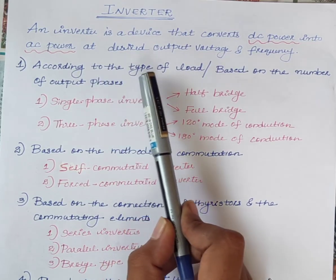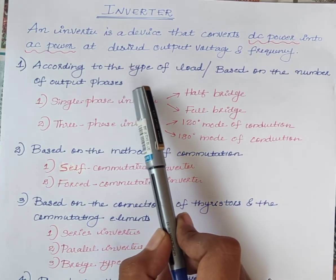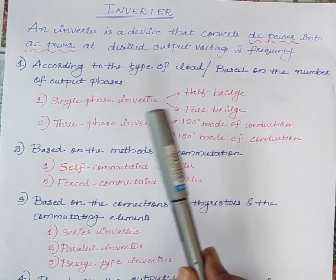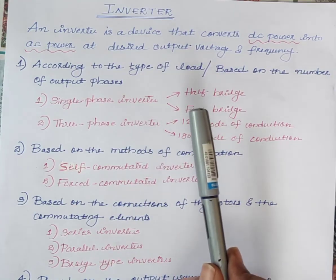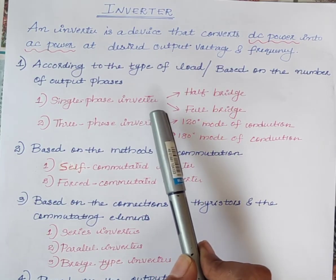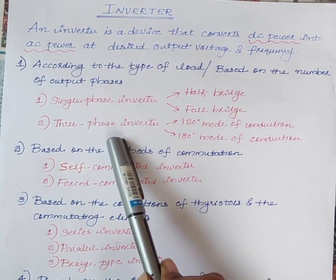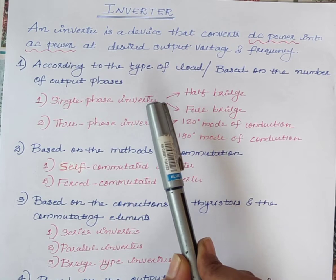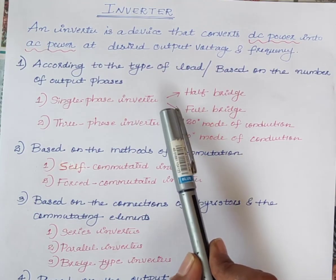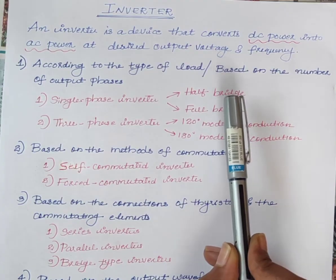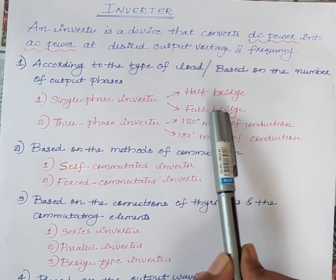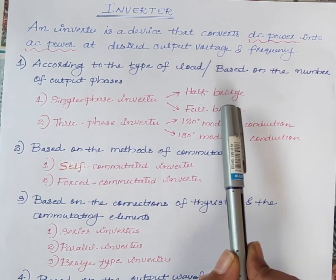First, according to the type of load or based on the number of output phases — there are two types of AC power: single phase and three phase. Therefore, there are two types of inverters: single phase inverter and three phase inverter. If the load is single phase, a single phase inverter is used. There are two types of single phase inverter: half bridge and full bridge. In half bridge inverter, two thyristors and two feedback diodes are used. In full bridge inverter, four thyristors and four feedback diodes are used.